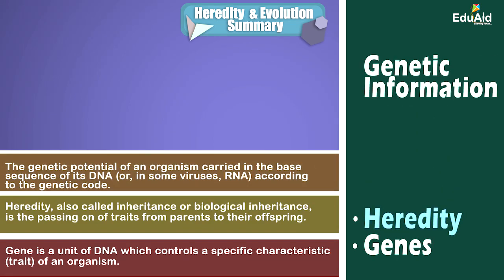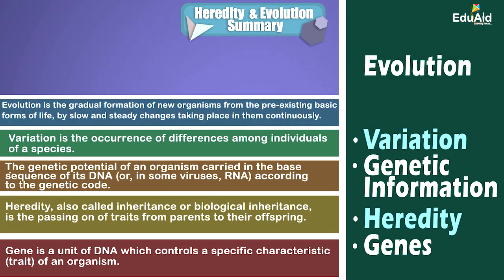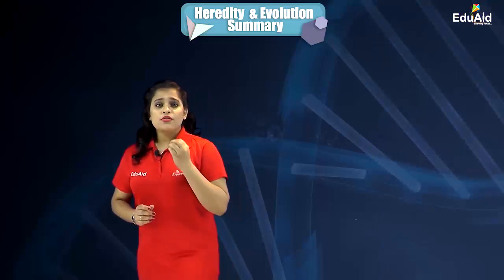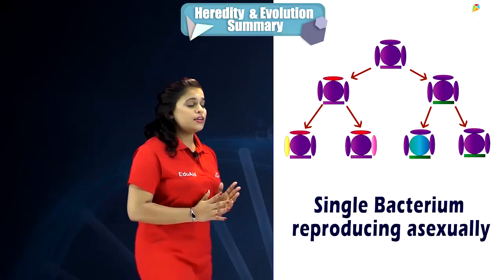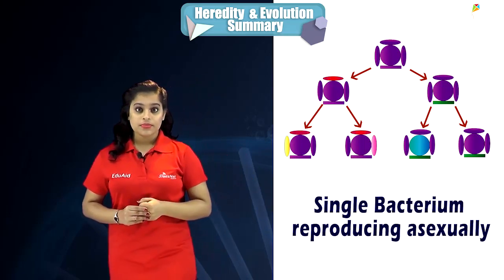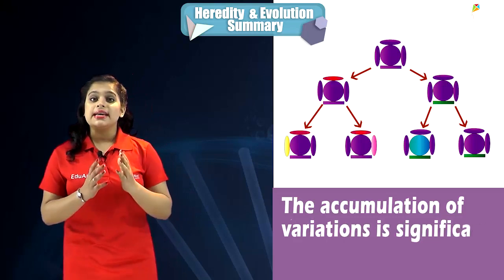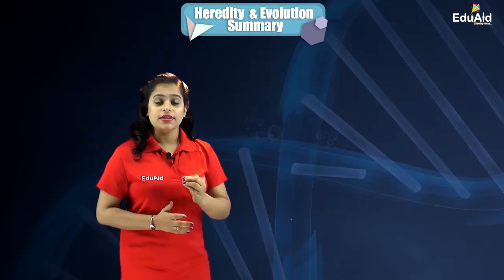We also learned about variation, evolution, genotype, and phenotype. From the example of a single bacterium reproducing asexually, we learned how variations get accumulated in subsequent generations and how this accumulation of variation is essential for evolution.